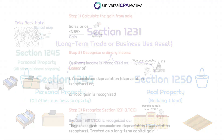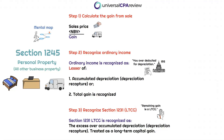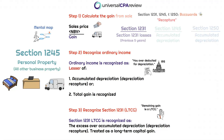Let's pull out our section 1245 mental map and break this down a bit differently than we did for section 1231. What I want you to remember is that regardless of whether we're dealing with section 1231, 1245, or 1250, we're thinking about Take Back Hotels and the IRS coming to take back their money.